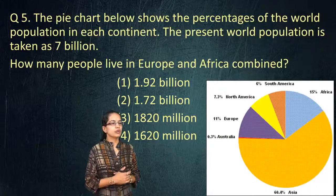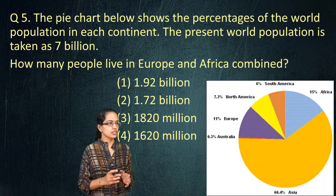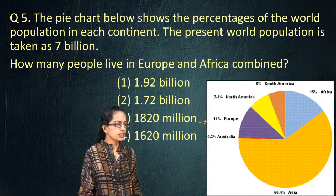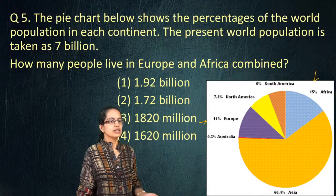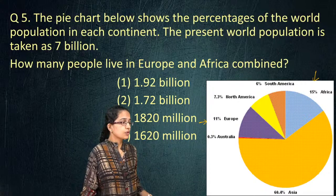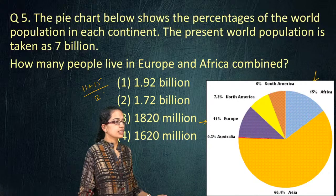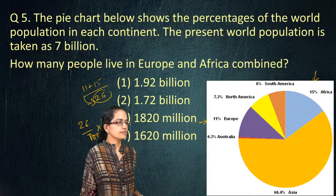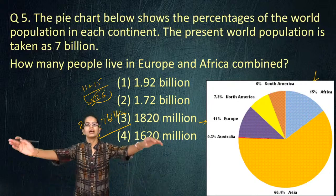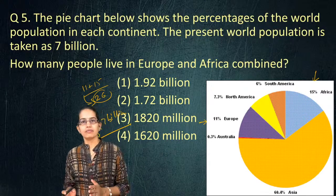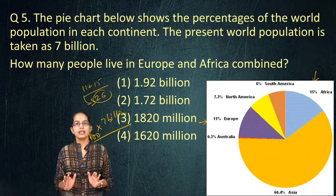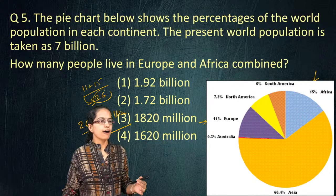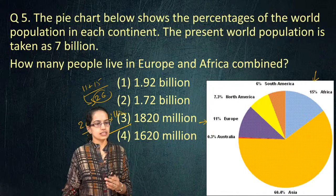The next question is a pie graph. The present world population is seven billion. You need to find how many people live in Europe and Africa combined. Europe is 11% and Africa is 15%. Simply add 11 + 15 = 26, then find 26% of 7 billion — that is the right answer. This is a very direct pie graph question. Recently most questions have been direct, and percentage change is also commonly seen.